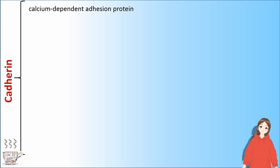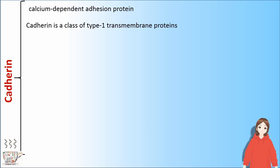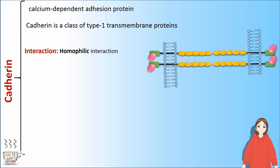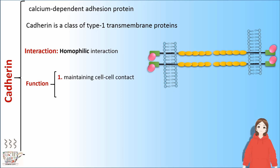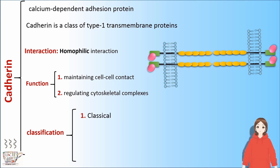Cadherin, a calcium-dependent adhesion protein, is a class of type-1 transmembrane proteins. It has homophilic interaction. Cadherin plays a role in maintaining cell-to-cell contact and in regulating cytoskeletal complexes. Cadherin can be divided into three subgroups: classical, desmosomal, and proto-cadherins.